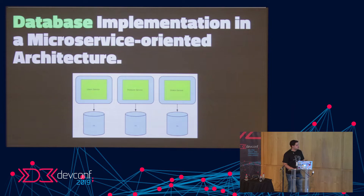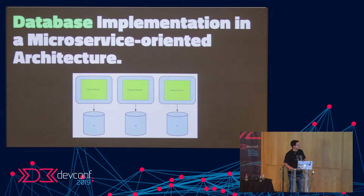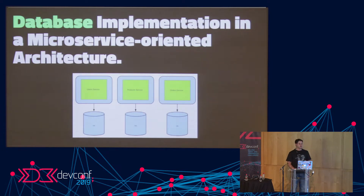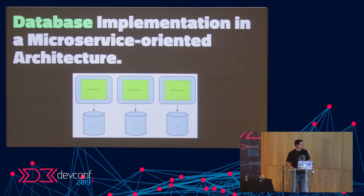In terms of how we want to implement the database in our microservices, ideally we want our user service, products, and orders — and the important part is that every microservice has its own database. Every microservice should control its own domain knowledge. We want them to be isolated, and we don't want a single point of failure where everything falls over.